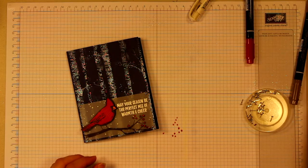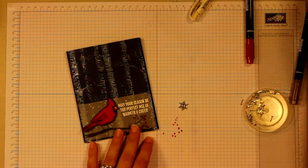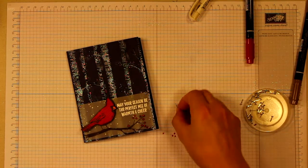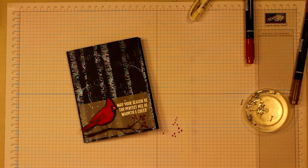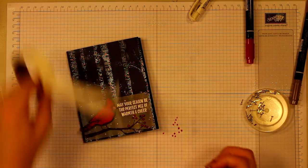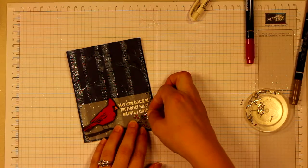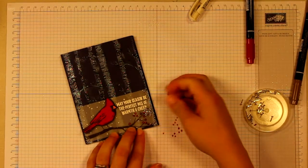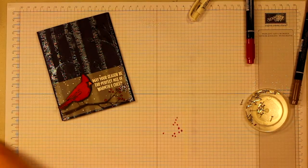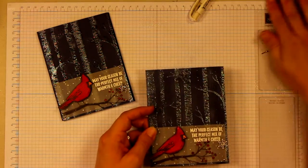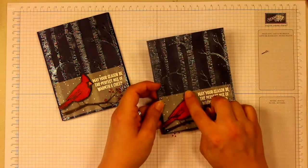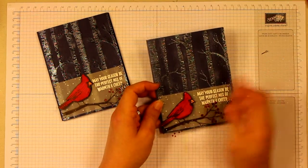And one of our Winter Wonderland embellishments using a glue dot. I did add on my original card a little bit of Dazzling Details glitter to the cardinal because I thought it was pretty.